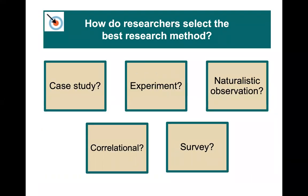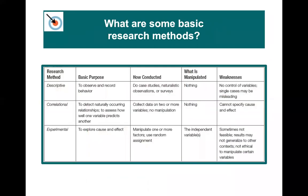How do researchers select the best research method? Going back to the previous module, we have a few options. Should we use a case study to answer our question about free will? An experiment? Or maybe it's more of a question suited to a correlational design combined with a survey? How about naturalistic observation — do we need to go observe the population we're interested in? These are the options to consider.